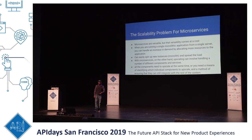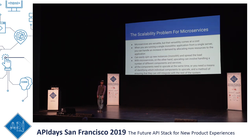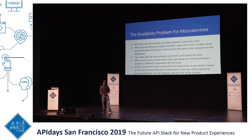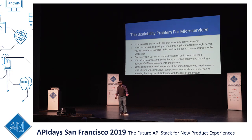Traditionally, when you're building an application, you're building it with a monolith. You may have an API, but it's a monolithic API, and you're consuming it with a front-end such as React or Vue.js. When you're running a monolithic API, it's pretty easy to scale because you can just horizontally scale it, replicate the server, add some load balancers — pretty standard things we're used to in the industry.